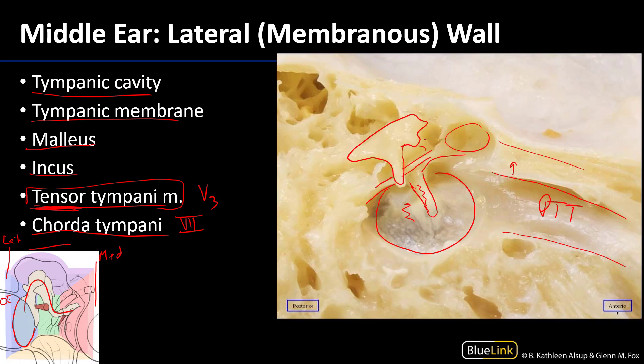Chorda tympani leaves the skull through the petrotympanic fissure and at that point is inside the infratemporal fossa. It joins up with the lingual nerve, which is a branch of V3, and chorda tympani fibers are hitchhiking on the lingual nerve. These fibers are twofold important: they carry pre-ganglionic parasympathetic fibers to the submandibular ganglion, which serves the submandibular gland and the sublingual glands.